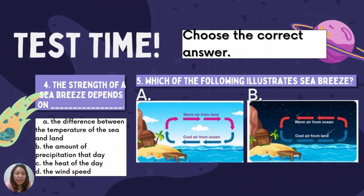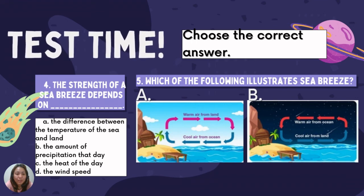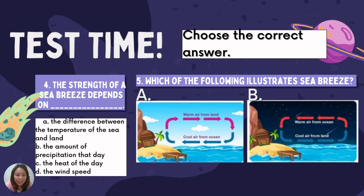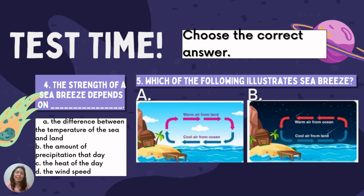Question number four: The strength of a sea breeze depends on blank. A — the difference between the temperature of the sea and land, B — the amount of precipitation that day, C — the heat of the day, or D — the wind speed. The answer is letter A — the difference between the temperature of the sea and land.